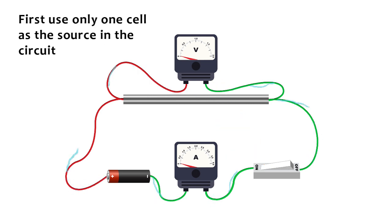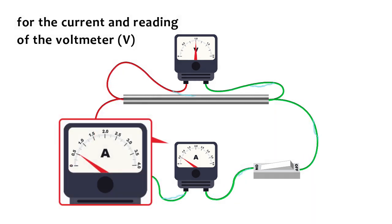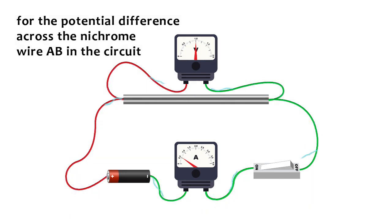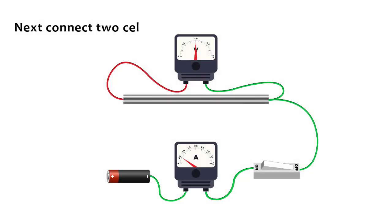First, use only one cell as the source in the circuit. Note the reading in the ammeter for the current and the reading of the voltmeter for the potential difference across the nichrome wire AB in the circuit. Now tabulate the values in the table as mentioned below.